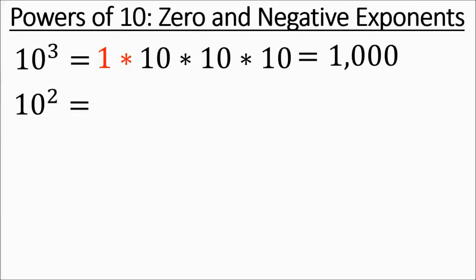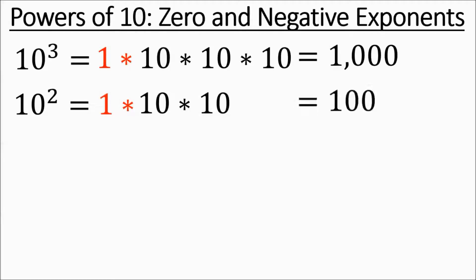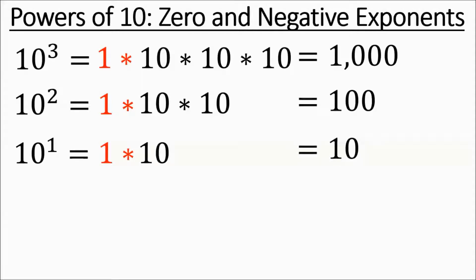10 to the power of 2 is 10 times 10 — you could also stick a 1 in there, so it's basically 1 with two zeros. 10 to the power of 1 is just a single 10; you could also write it as 1 times 10, and it's a 1 with one zero.